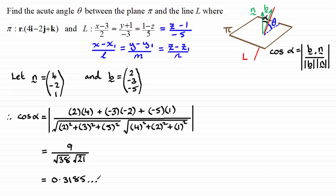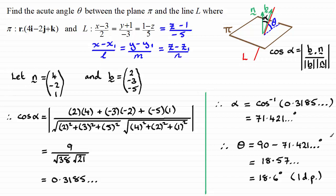So all you need to do now is just take the inverse cosine of that and that will get you alpha. It turns out to be 71.421 and so on degrees. And then I just need to take this away from 90 degrees to get theta. And if you do that, you end up with 18.6 degrees to one decimal place.